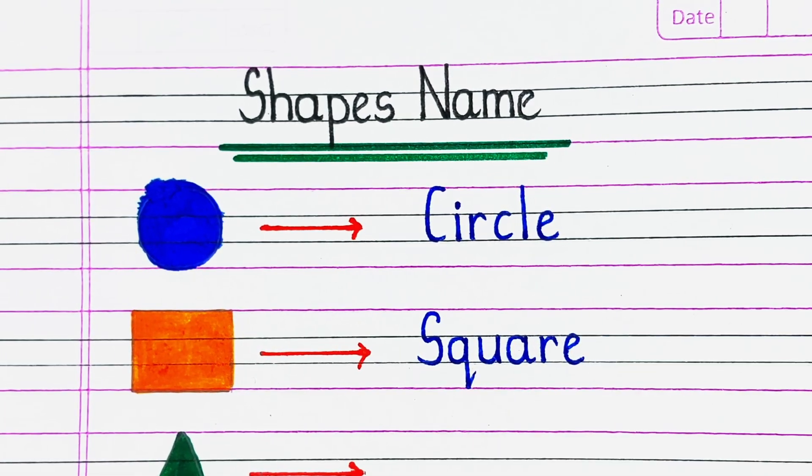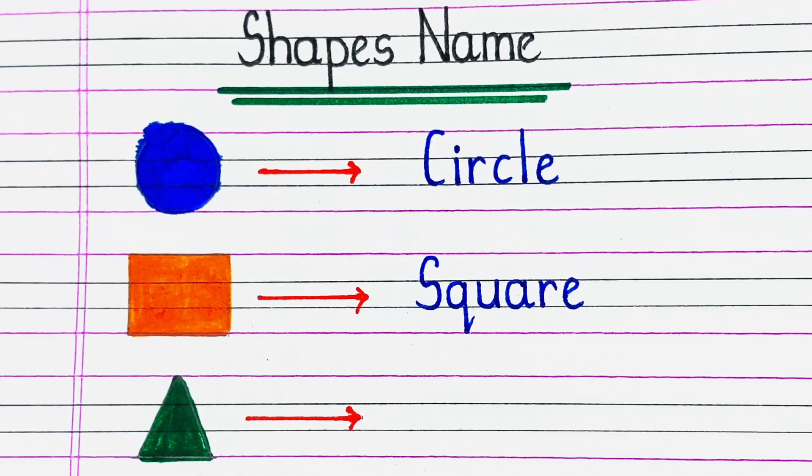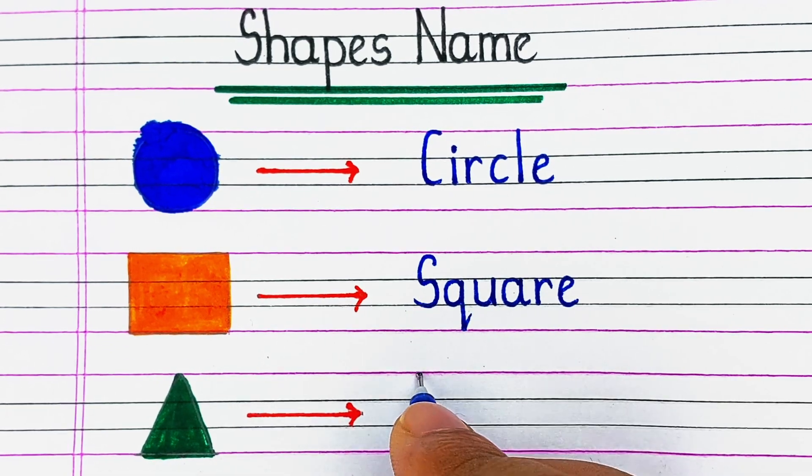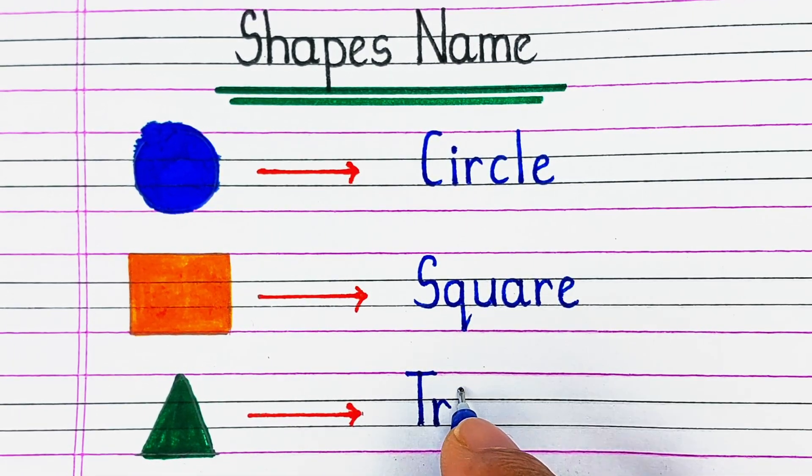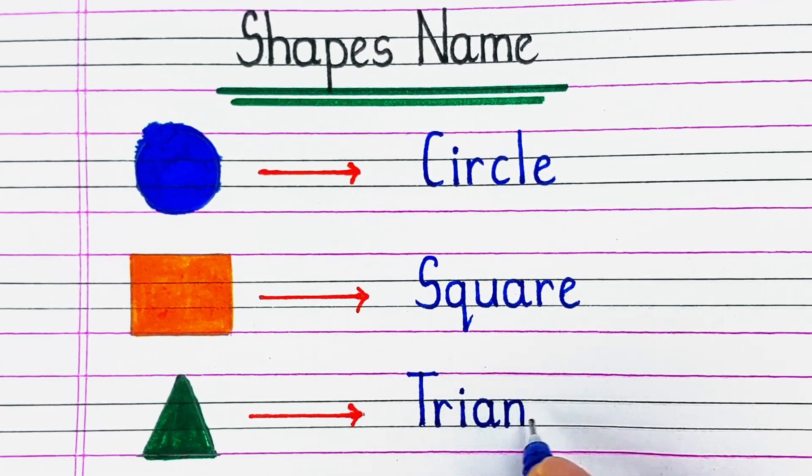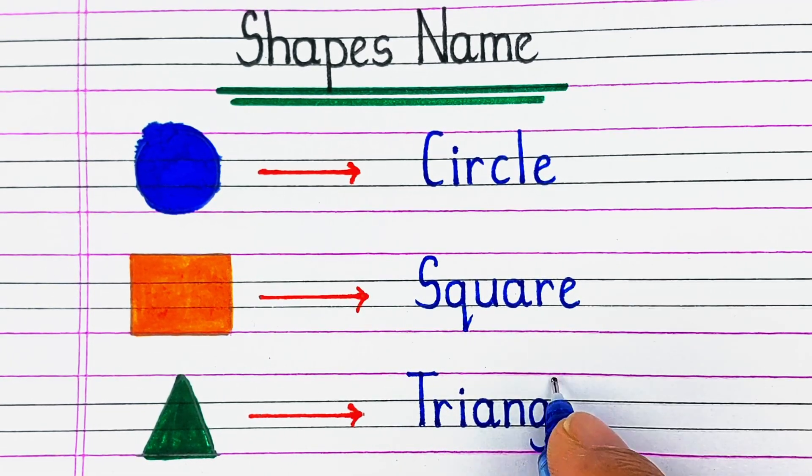First is a round structure that we call a circle. Next is a shape with 4 equal sides, it is called a square.